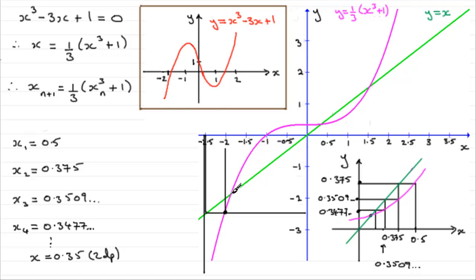I hope this has given you some idea of how iteration works — why we make y equal x, and why we have our other graph. You have your graph y equals x and your other curve, and you're looking to see if your values can spiral in to your root. Okay, that brings us to the end of this tutorial.